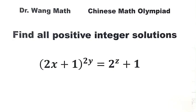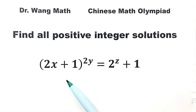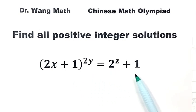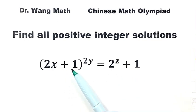In this video, we can solve a question from the Chinese Math Olympiad. Find all positive integer solutions of this equation: the quantity (2x + 1) to the power of 2y equals 2 to the power of z plus 1. How do we solve one equation for three variables?